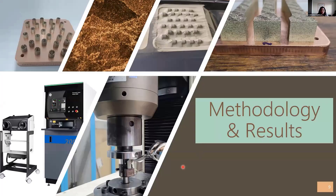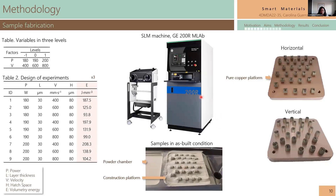Here is a collage of some images taken during the process that helped me obtain my results. I used a General Electric machine — a selective laser melting system — and I performed a design of experiment where I varied the laser power and scan velocity, keeping constant the layer thickness and hatch spacing. Using that formula, I could estimate the volumetric energy used to construct all my samples.